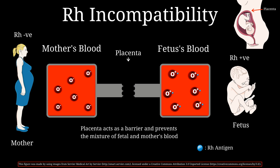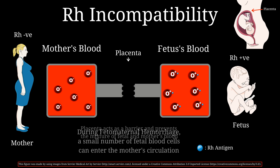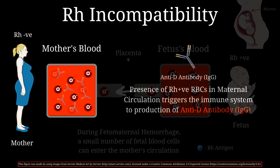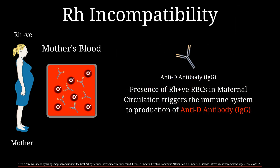However, if at any point during pregnancy there is mixing of blood — perhaps due to fetal-maternal hemorrhage — a small number of fetal red blood cells can enter the maternal circulation. Presence of RH positive red cells in RH negative individuals will trigger an immune response which will produce anti-D antibodies. These anti-D antibodies are IgG in nature, and IgG antibodies can cross the placenta.